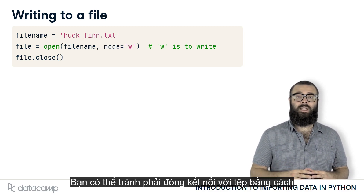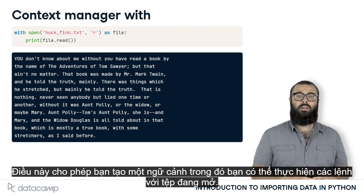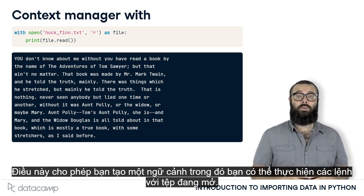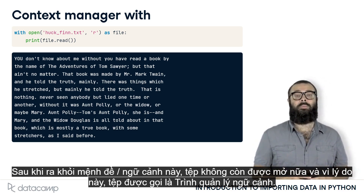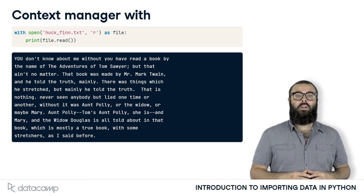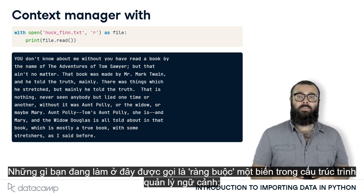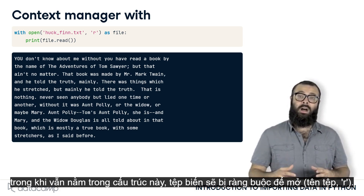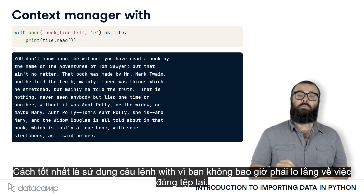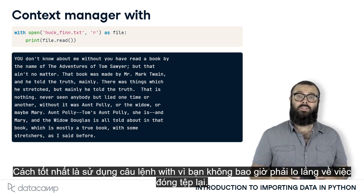You can avoid having to close the connection to the file by using a with statement. This allows you to create a context in which you can execute commands with the file open. Once out of this clause or context, the file is no longer open, and for this reason with is called a context manager. What you're doing here is called binding a variable in the context manager construct. While still within this construct, the variable file will be bound to open file name r. It is best practice to use the with statement, as you never have to concern yourself with closing the file again.